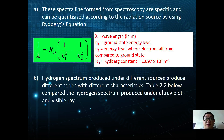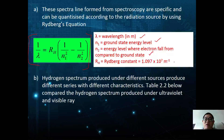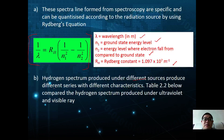These spectral lines are specific and can be quantized according to the radiation source using the Rydberg equation: 1/λ = R_H × (1/n₁² − 1/n₂²), where λ is wavelength in meters, n₁ is the ground state energy level, n₂ is the energy level from which the electron falls, and R_H is the Rydberg constant equal to 1.097 × 10⁷ m⁻¹.